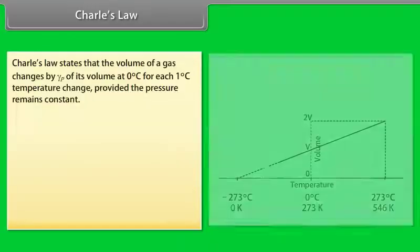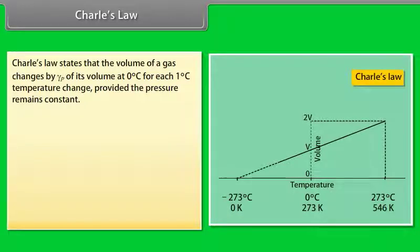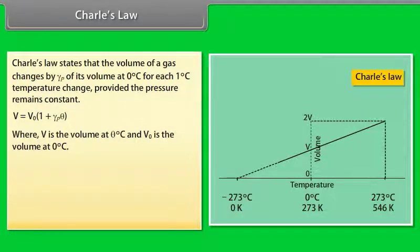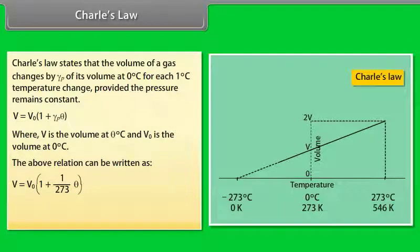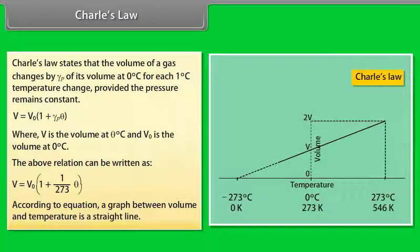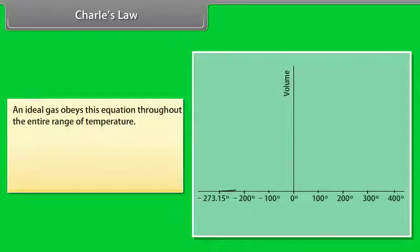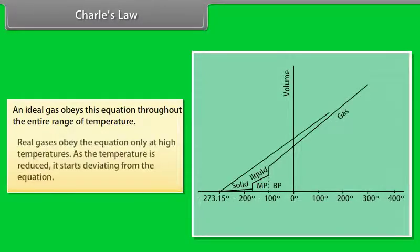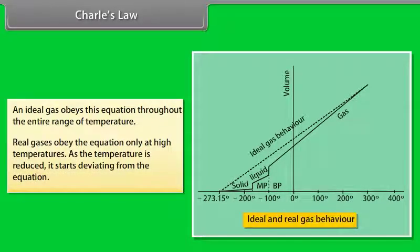Charles law states that the volume of a gas changes by gamma P of its volume at 0 degrees centigrade for each 1 degree centigrade temperature change, provided the pressure remains constant. V equals V not multiply by 1 plus gamma P theta, where V is the volume at theta degrees Celsius and V not is the volume at 0 degrees centigrade. The above relation can be written as V equals V not multiply by 1 plus theta upon 273. According to this equation, a graph between volume and temperature is a straight line. An ideal gas obeys this equation throughout the entire range of temperature. Real gases obey the equation only at high temperatures. As the temperature is reduced, it starts deviating from the equation.